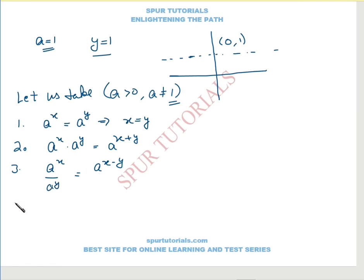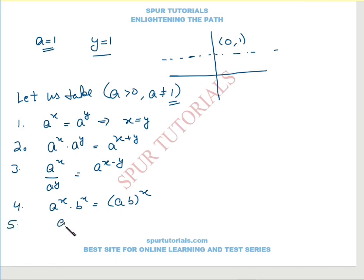The next property is: a raised to power x multiplied by b raised to power x equals (ab) raised to power x. Whenever the power is the same, you may multiply the bases, or you may divide the bases, provided b is greater than 0.